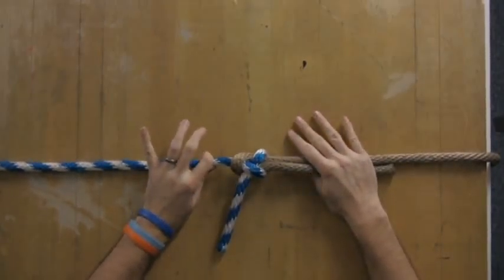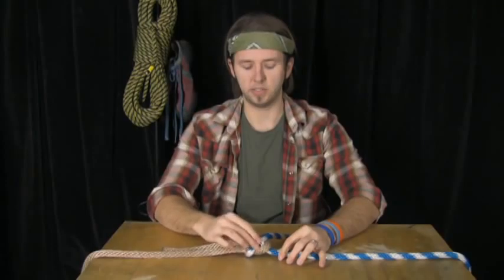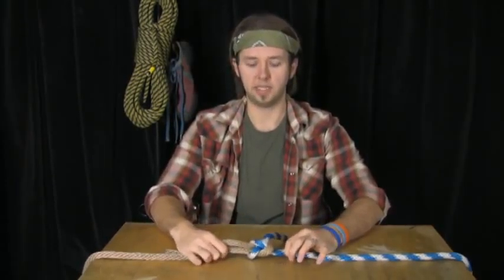It's just as secure as a square knot but once again it's very easy to untie because this is not as pinched as that is right there. So that is a sheet bend. Thanks for watching.